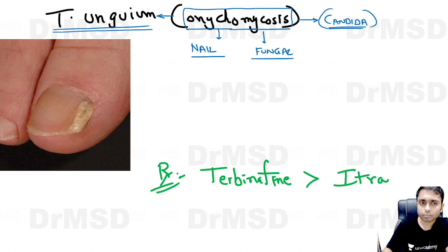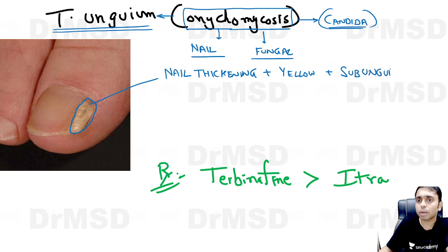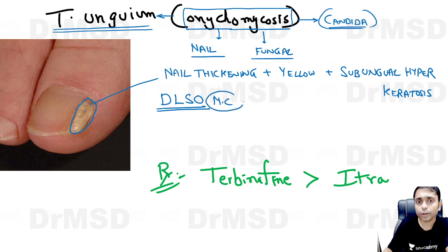Here you are able to see at the distal part of the nail and also the lateral part of the nail, there are some nail changes which are classically observed. The nail changes are: nail thickening, yellowish discoloration, and subungual hyperkeratosis. Because the distal and lateral parts of the nail are involved here, this is described as distal lateral subungual onychomycosis, which is the most common variety of onychomycosis.